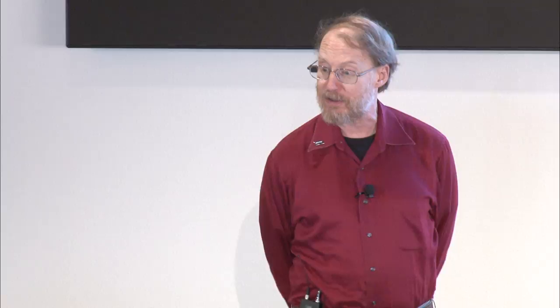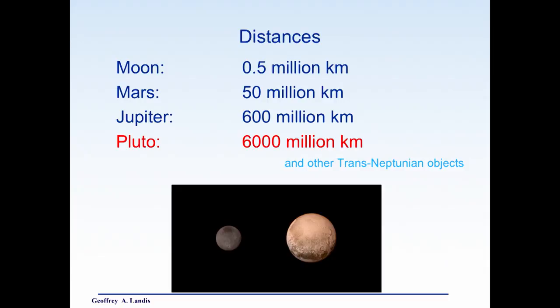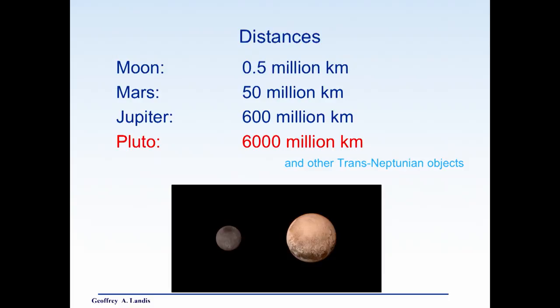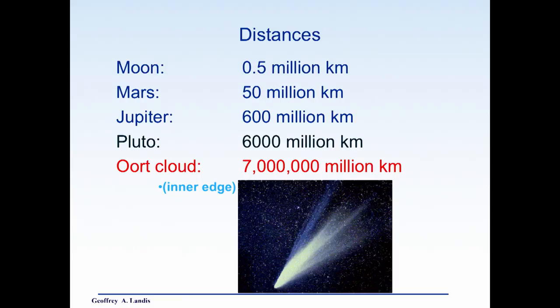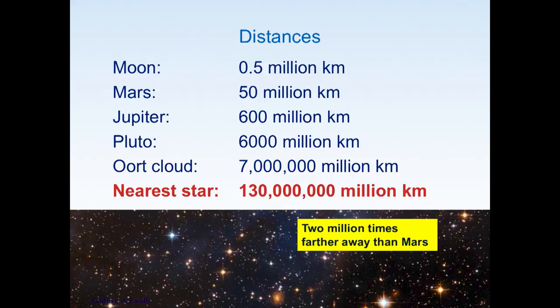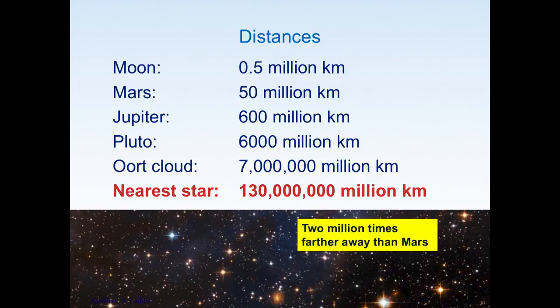Okay, let's take a look at how big space is. Here's the moon, half a million kilometers away, farthest we've ever been. Here's Mars. At its closest, it's roughly a hundred times further away, a lot harder. Jupiter, 600 million kilometers away. Pluto, 6,000 million kilometers away, and, of course, the other trans-Neptunian objects. You want to go out to the Oort cloud. That's roughly seven million million kilometers away. These are vast numbers compared to the places we've been, the moon. Go to the nearest star. We need 130 million million kilometers. So roughly, it's about two million times further away from us than Mars. That makes it a hard problem.